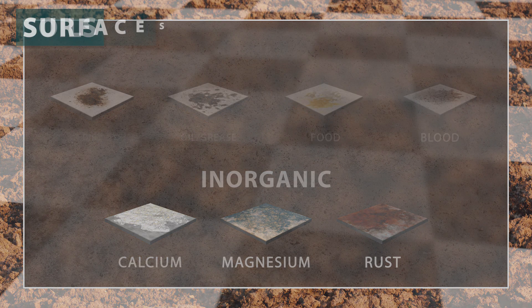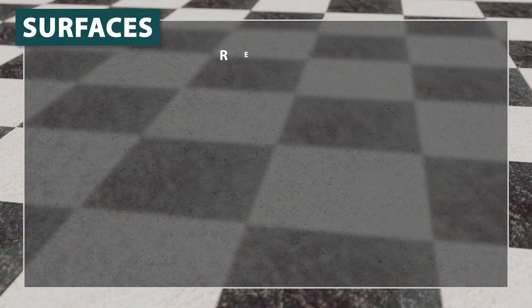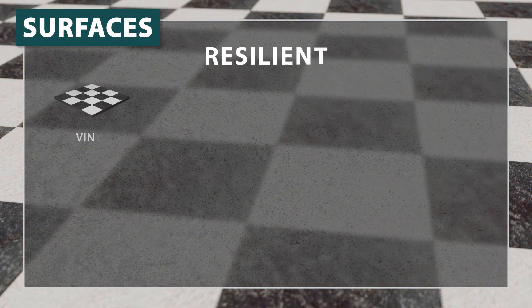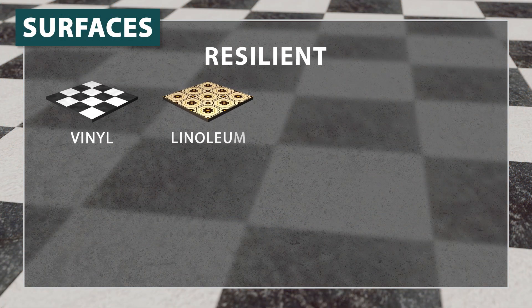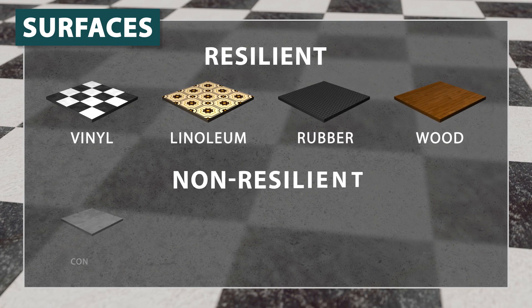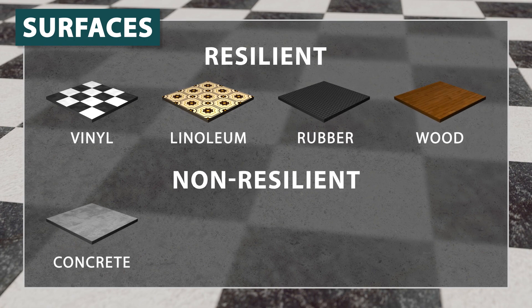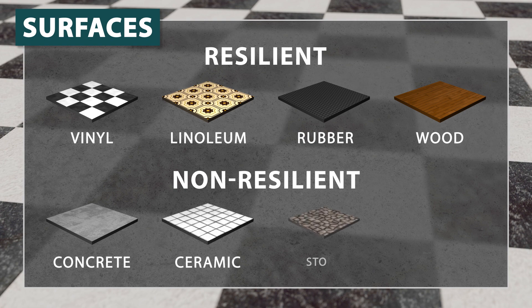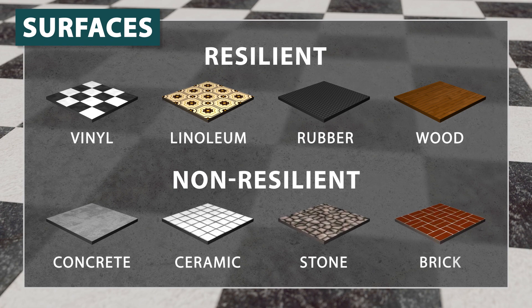Surfaces also fall into two categories. Resilient surfaces relate mostly to floors and include vinyl, linoleum, rubber, and wood. Non-resilient surfaces would include concrete, ceramics, stone, and brick.